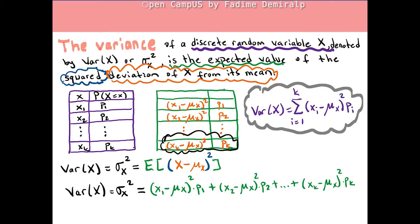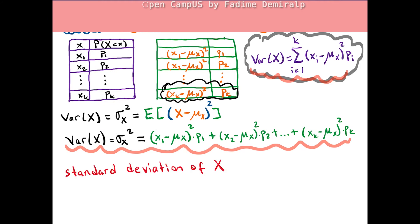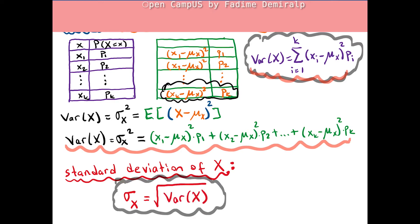In the variance formula, you see that square of x is involved, so it's difficult to interpret the variance in the unit of the outcome. Here's the standard deviation of x, denoted by sigma, which is the square root of the variance of x. The standard deviation of x will be in the same unit as x.